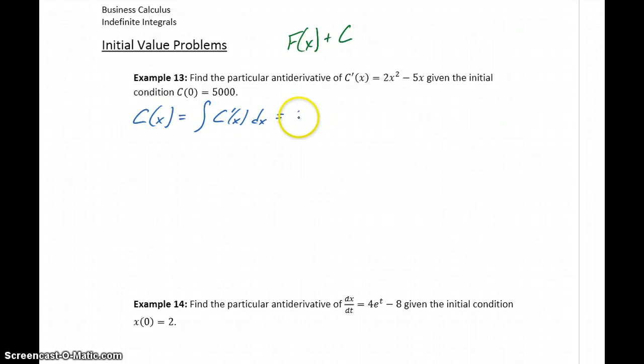Which in this case will give us 2 times x³ over 3 minus 5 times x² over 2 plus, again, that constant c.